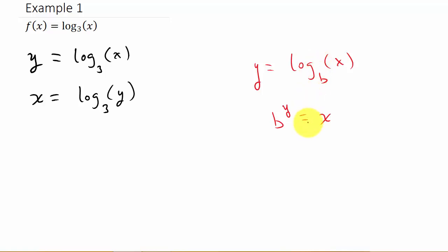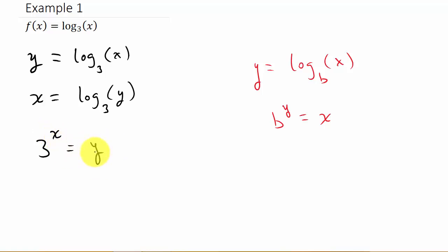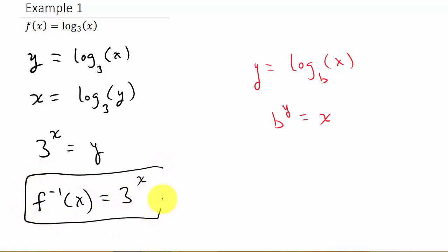Remember going from logarithmic to exponential and exponential back to logarithmic, you have to use this property. So if we convert this, it's b raised to the y equals x, which gives us 3^x = y. I've solved for y, so now I change y to the f-inverse symbol, writing it on the left side: f⁻¹(x) = 3^x.